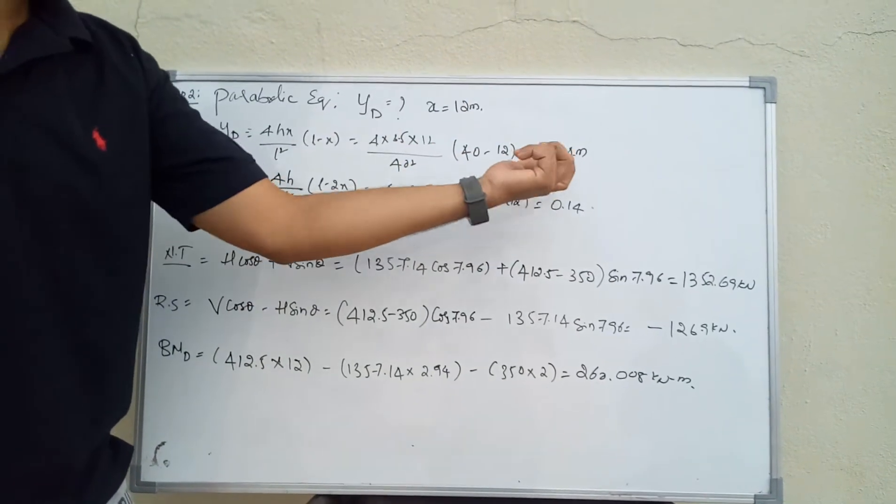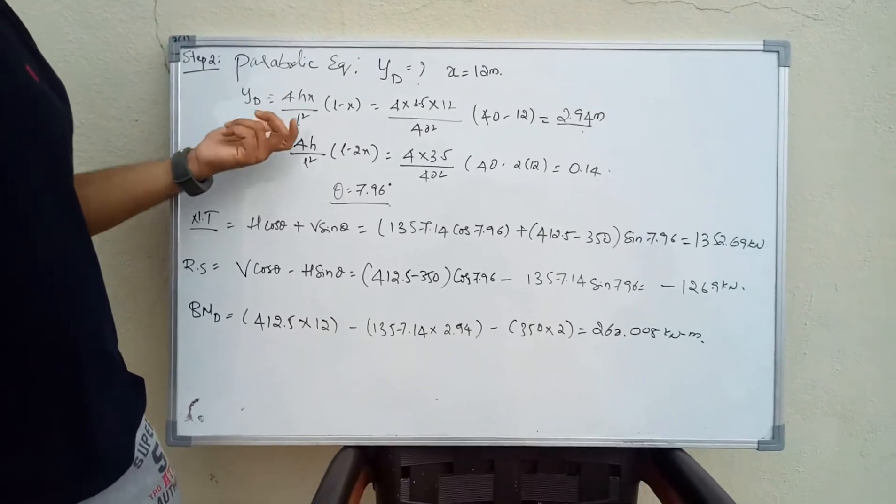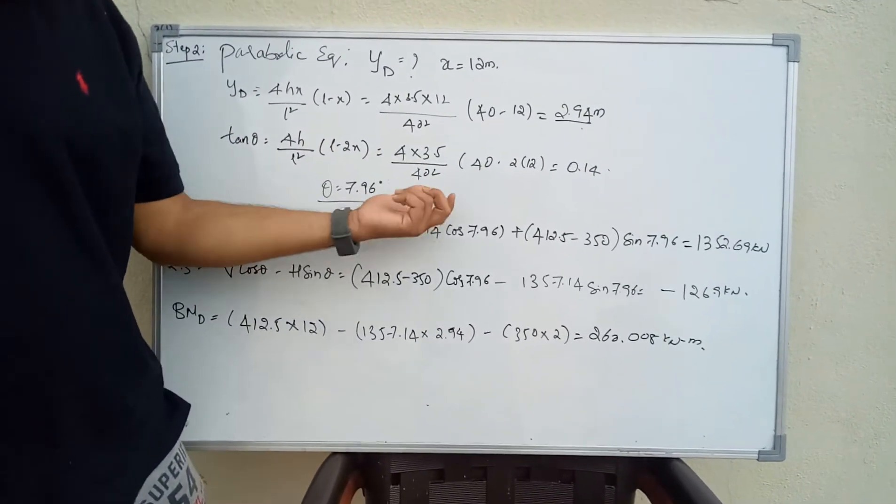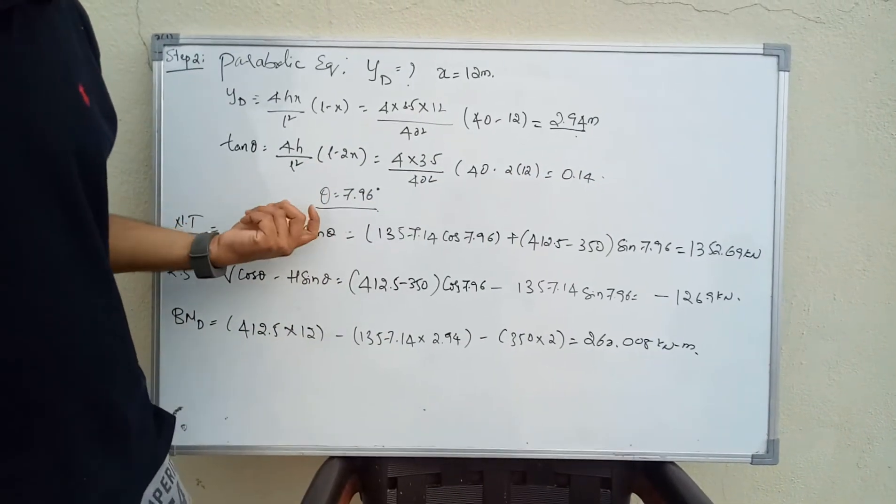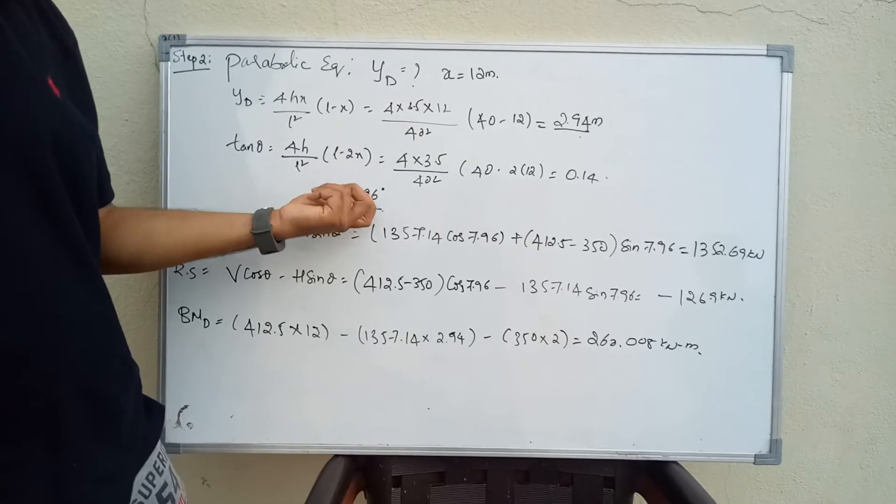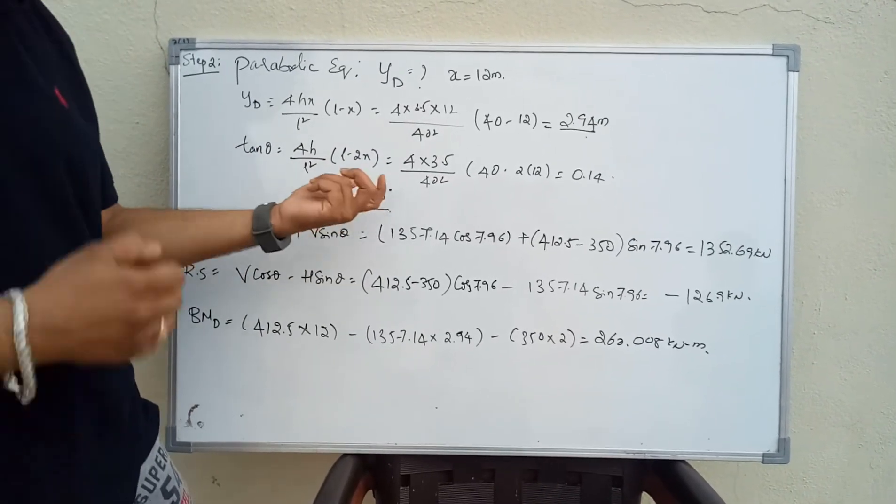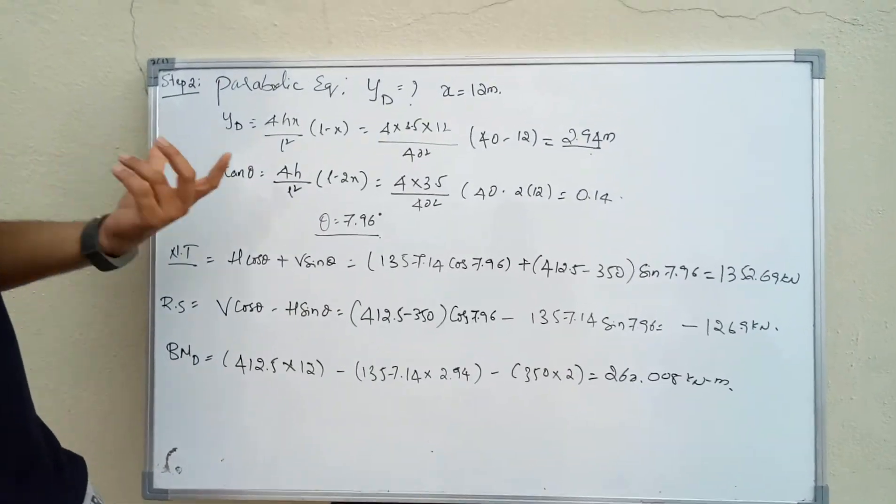To find tan theta, we use the formula: tan theta equals 4H by L squared into L minus 2X. Substituting the values, we got 0.14. The inverse tan gives us theta equals 7.96 degrees.